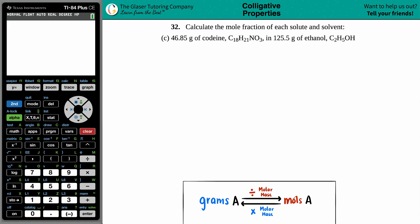Number 32: Calculate the mole fraction of each solute and solvent. In this case we have 46.85 grams of codeine, which is C18H21NO3, in 125.5 grams of ethanol, which is C2H5OH.